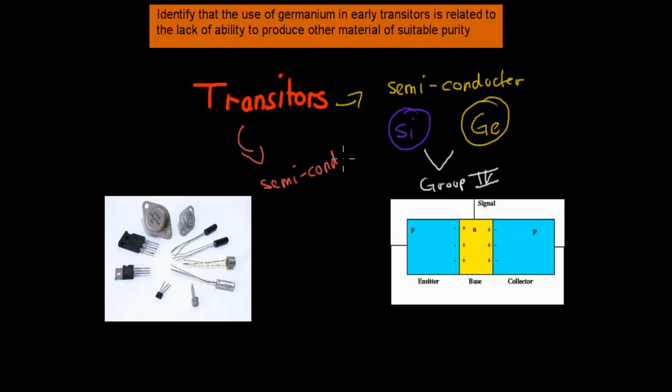There are types of semiconductors which we call the P and N type semiconductors, and we're going to cover both these in the next couple of videos. But this dot point is really straightforward. It just says identify that the use of germanium in early transistors is related to the lack of ability to produce other materials of suitable purity. These are pictures of different types of transistors.